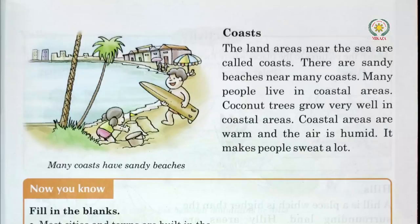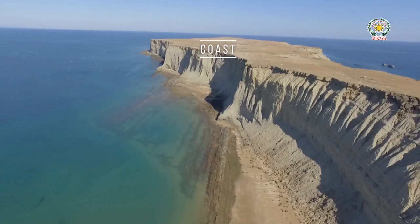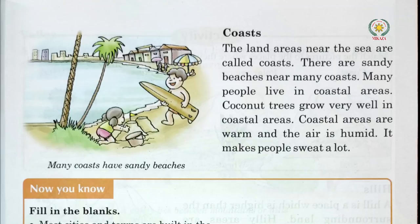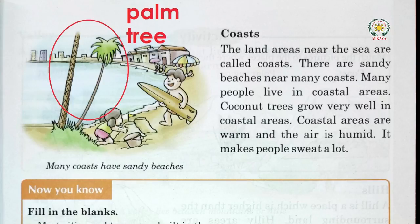The land areas near the sea are called coasts or coastal areas. There are sandy beaches near many coasts. Many people live in coastal areas and coconut trees grow very well here. The coastal climate is warm and the air is humid. For example, Karachi is a coastal area.